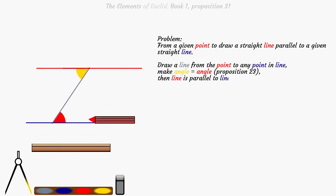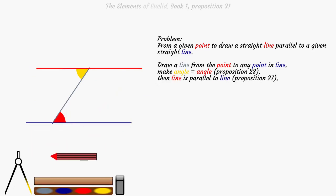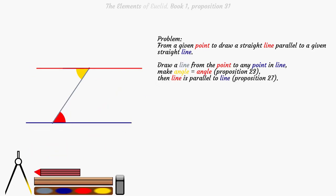Then the red line is parallel to the blue line, Proposition 27. QED.